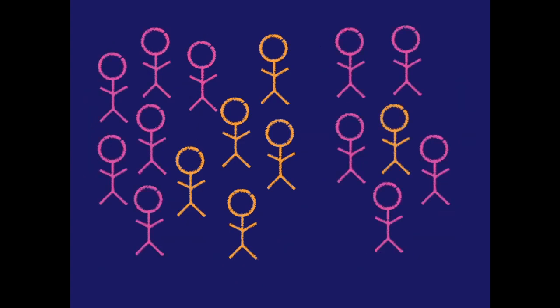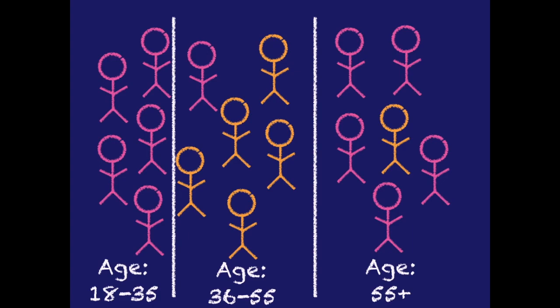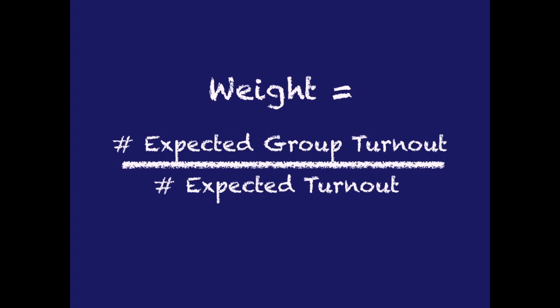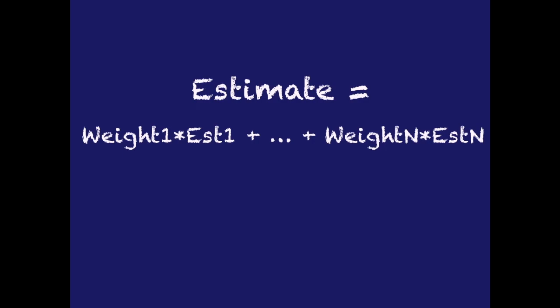In practice, we end up having to do something called stratification, where we break a voting population into strata — segments that we believe are roughly homogenous in voting behavior and polling behavior. That means they turn out to vote at roughly the same rate and respond to polls at roughly the same rate. For example, we might break down our population based on age groups. The estimates are composed of many small sub-estimates for different strata, and the frequency of voting for each group is what you might hear on the news as a weight — the expected turnout of the group divided by the total expected turnout.